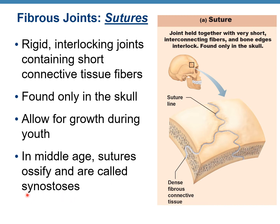The word 'synostosis' — 'syn' means come together and 'ostosis' means bones, so two bones come together. The sutures are actually very small connective tissue fibers — so that's very short connective tissue fibers — and this is what makes the sutures of the skull. They are only found in the skull.